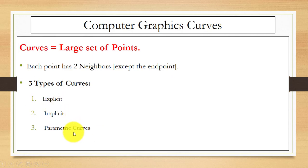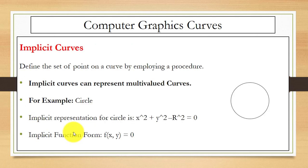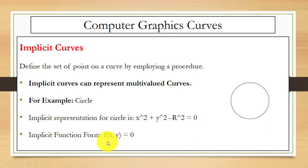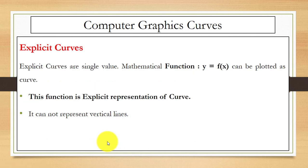Let's see one by one what implicit, explicit, and parametric curves are. In an implicit curve, the curve is defined as the set of points by employing a procedure. We can use implicit curves for the representation of multi-valued curves. You can see this is the implicit representation for a circle, along with its function form.